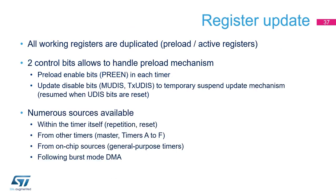All HR timer working registers are duplicated with a shadow register — this applies to the period and compare registers and numerous other configuration registers — allowing glitch-free operation when updating multiple registers. Write accesses are done to the preload registers, which are transferred to the active registers when an update event occurs, usually at the beginning of a PWM cycle. A preload enable bit (preen) globally enables the register shadowing; the update disable bits MUDIS and TXUDIS can temporarily suspend the update event for complex HR timer updates. Numerous update trigger sources are available: within the timer itself, from other timers such as master or timers A to F, other on-chip sources such as general-purpose timers, or following DMA burst mode.